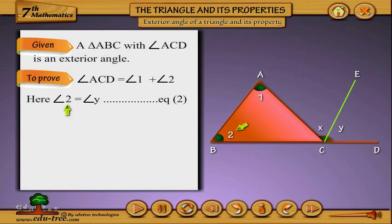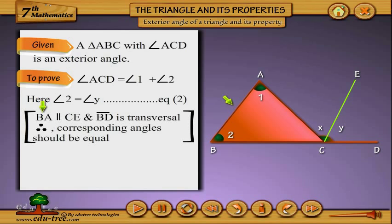Here angle 2 equals angle y, we call it equation 2. BA parallel to CE and BD is transversal, therefore corresponding angles should be equal.